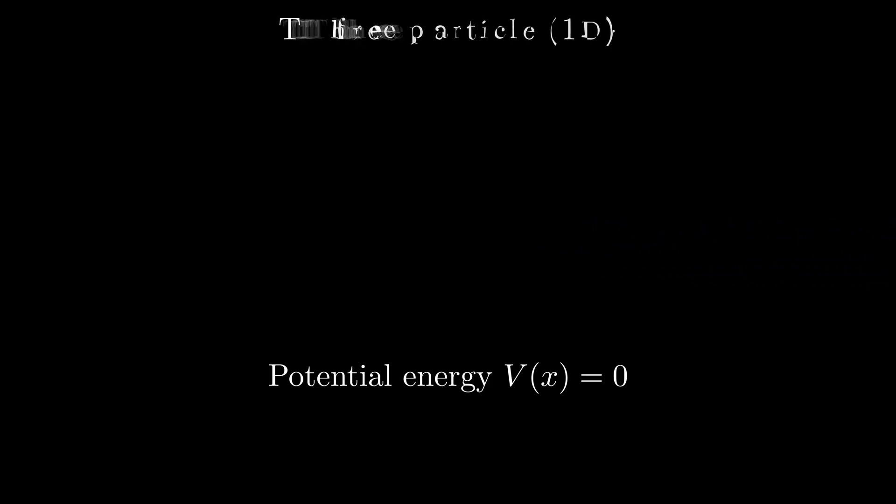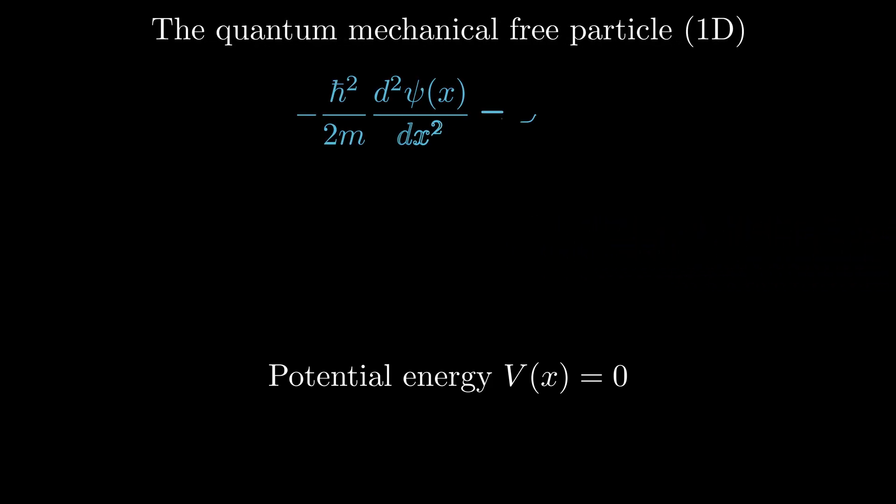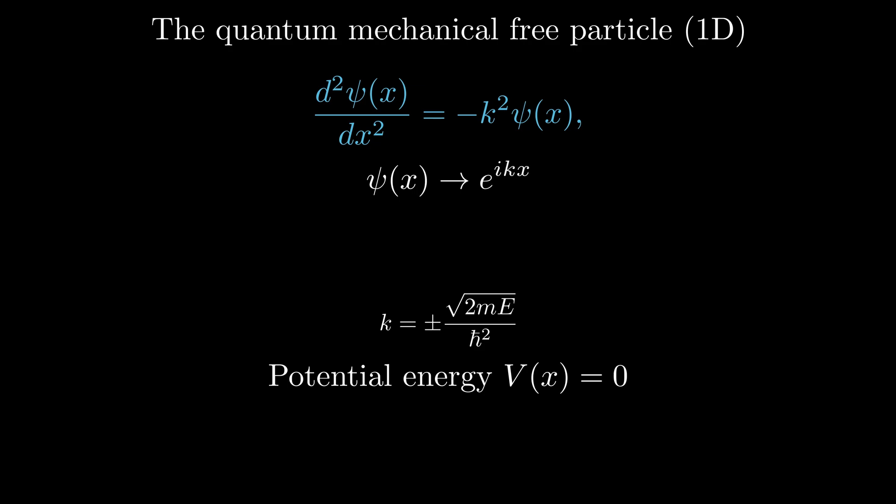Let us take the example of a free particle, which will be useful for later discussion of tunneling. Free from external forces, its potential energy V(x) = 0. Solving the one-dimensional time-independent Schrödinger equation for this particle reveals a sinusoidal solution. When combined with the time-dependent part, it yields plane waves, the free particle stationary states.